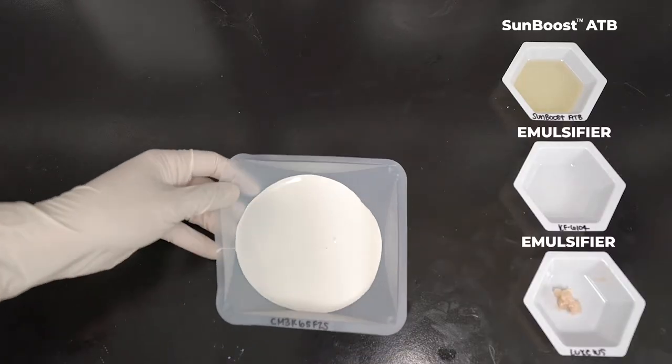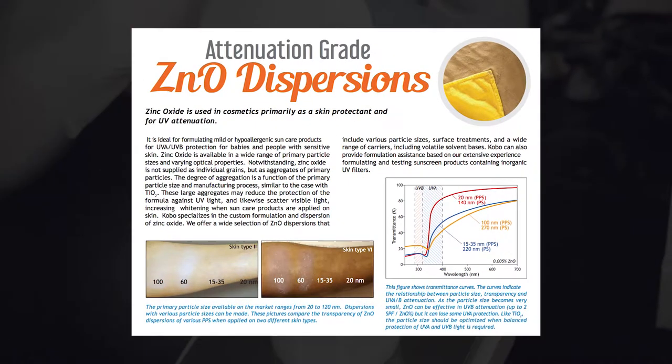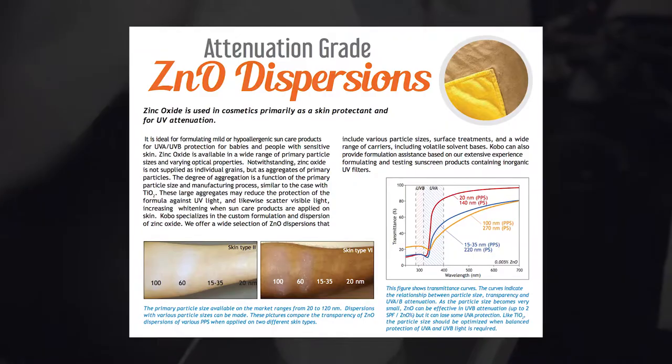CM3K65FZS is Kobo's triethoxycaprylsilane-treated zinc oxide dispersed in cyclopentosiloxane with a wetting agent. This dispersion contains a high active ZnO content of 62.4%.